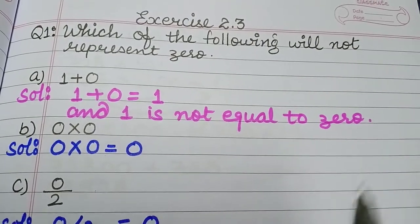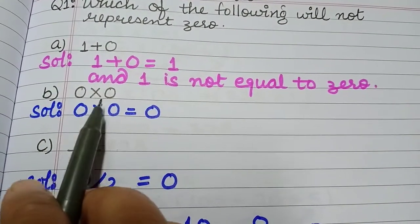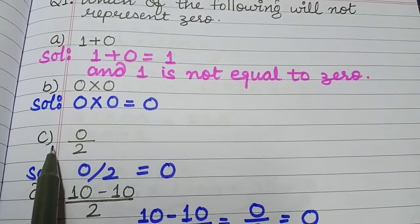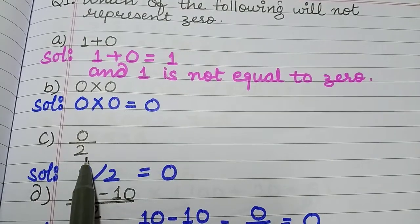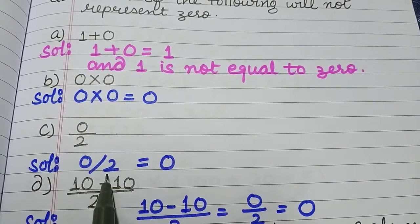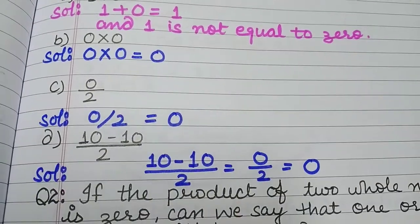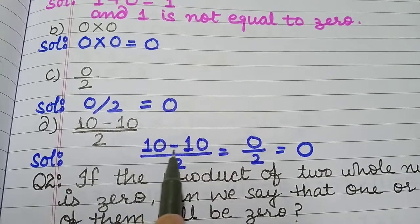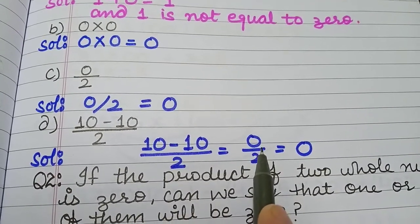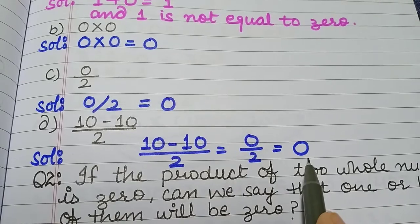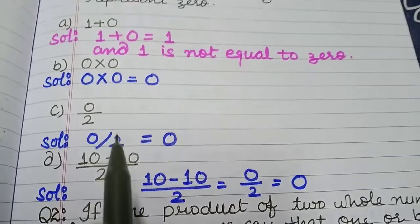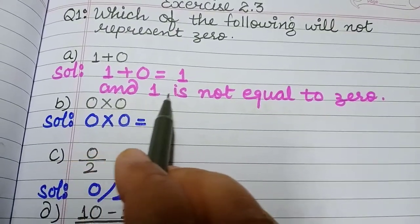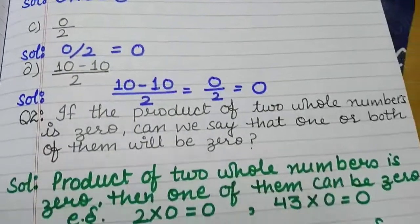1 is not equal to 0. Part (b) is 0 into 0, which is equal to 0. Part (c) is 0 divided by 2, which is equal to 0. Part (d) is 10 minus 10 divided by 2. We know 10 minus 10 is equal to 0, so 0 divided by 2 again gives 0. So only in part (a), 1 plus 0 equals 1, which is not equal to 0.